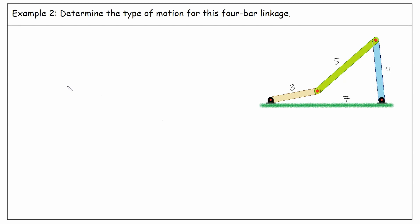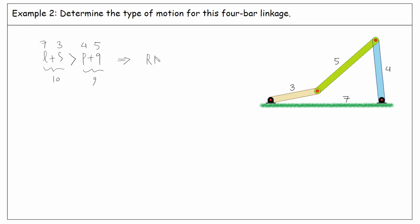In the second example, if we compare L plus S and P plus Q, the longest is 7, the shortest is 3, and the two others are 4 and 5. 7 plus 3 is 10, and 4 plus 5 is 9, so L plus S is greater than P plus Q. Therefore, the type of motion is rocker-rocker.